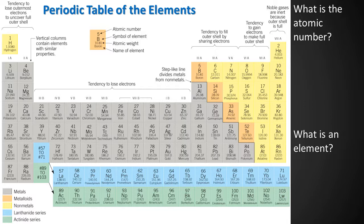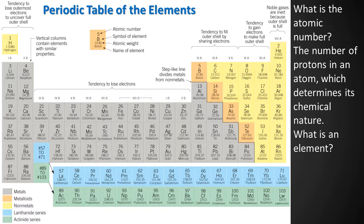Make sure you look at the legend to interpret the periodic table correctly. The atomic number represents the number of protons in the nucleus. Since elements and atoms are defined by the number of protons in their nuclei, this is how the periodic table is organized. An element is a group of the same kind of atoms.